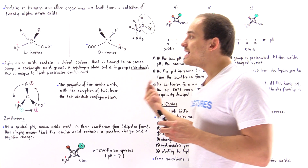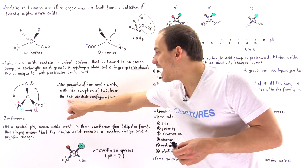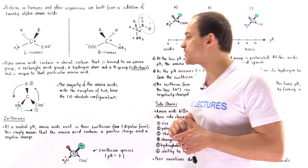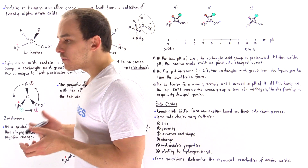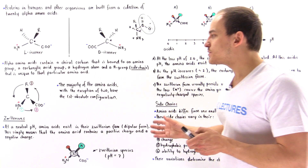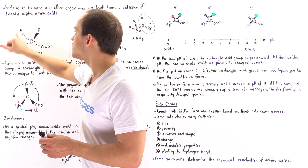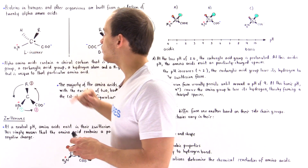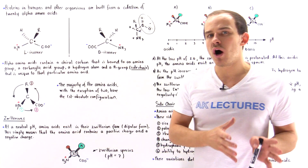18 out of the 19 chiral amino acids exist in their S absolute configuration, and only cysteine exists in the R absolute configuration. To determine absolute configuration, we use organic chemistry: we prioritize the different types of atoms attached to the chiral carbon, giving them values ranging from one to four based on atomic number.